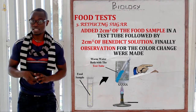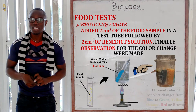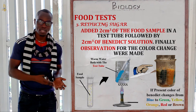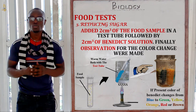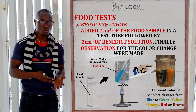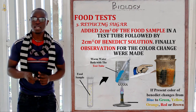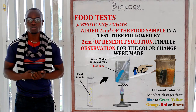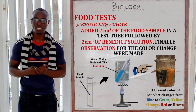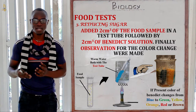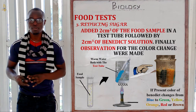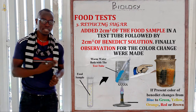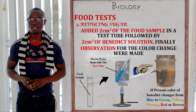If reducing sugar is present in the food sample, the colour of the Benedict's solution will change from blue to either green, orange, red, or brown. Brown indicates a maximum amount of reducing sugar is present, while green indicates there is very little reducing sugar.